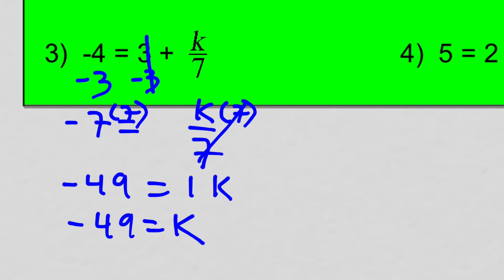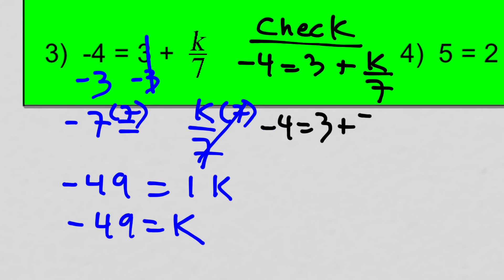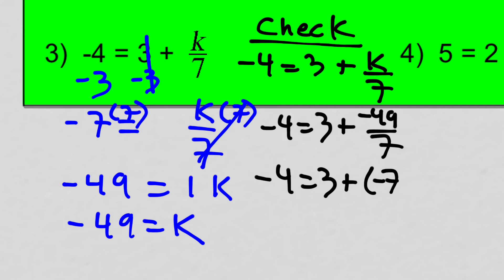The check: original equation, negative 4 equals 3 plus K over 7. Substitute in negative 49: negative 4 equals 3 plus negative 49 divided by 7. We divide first — negative 49 divided by 7 is negative 7. So negative 4 equals 3 plus negative 7, which is negative 4. Both sides of the equation are the same.